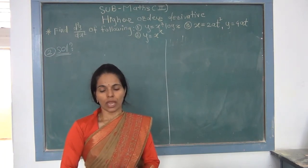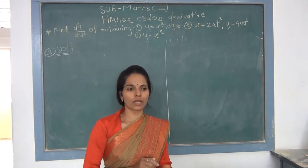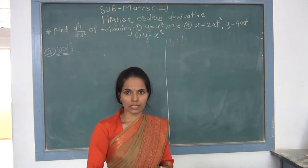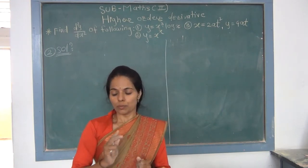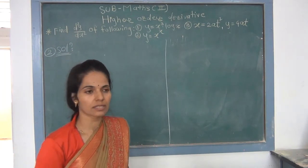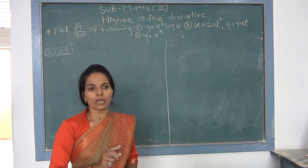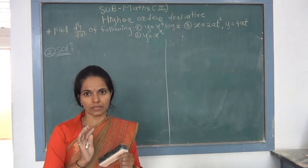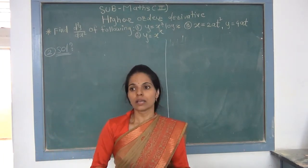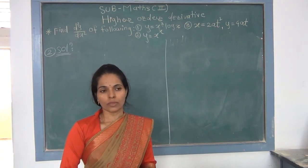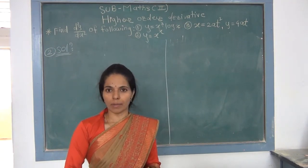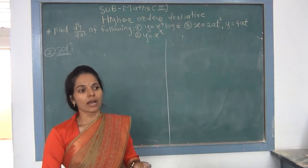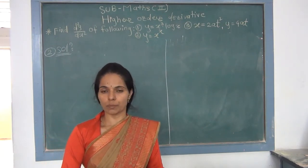Let us now solve the third example. We are given x = 2at² and y = 4at as a parametric function where t is the parameter, and we have to find the second order derivative d²y/dx². Since x and y are both defined separately in terms of t, this is a parametric function.